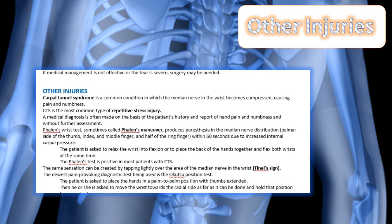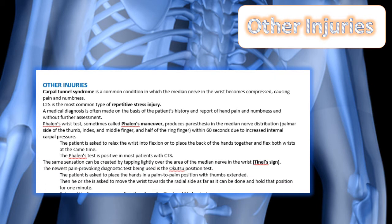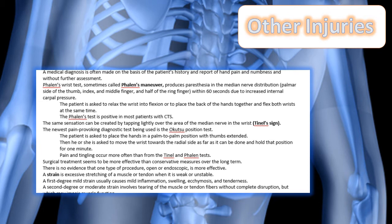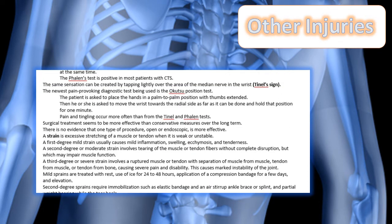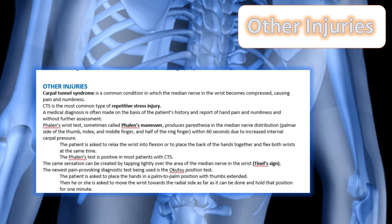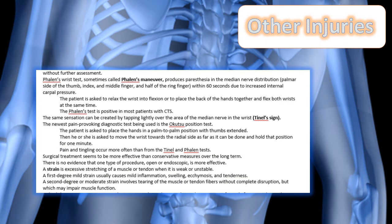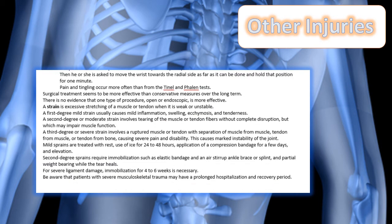Other injuries covered in your notes include carpal tunnel syndrome and repetitive stress injuries. Testing for carpal tunnel syndrome is important and is covered in your textbook. The Phalen's maneuver — also called the Phalen's wrist test — produces paresthesia in the median nerve distribution: the palm side of the thumb, index, and middle finger and half of the ring finger, within 60 seconds due to increased internal carpal pressure. The Tinel's sign produces the same sensation by tapping lightly over the area of the median nerve in the wrist.